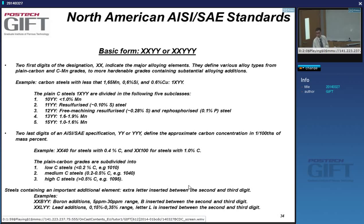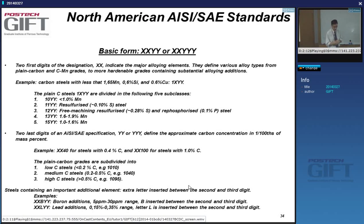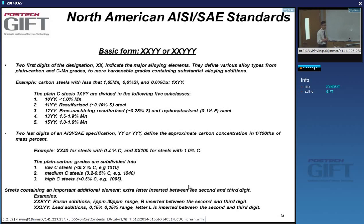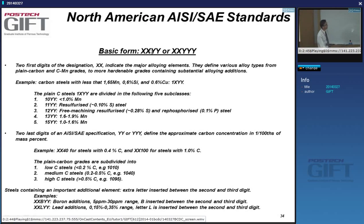There is the American Iron and Steel Institute, which has standards widely used across many industries to specify steel grades. They are very closely tied with the Society of Automotive Engineers — the automotive industry is a very big user of steel products. They use a very simple scheme with four or five numerical or alphanumeric symbols, and they always look like XXYY or XXYYY, because these digits refer to different things.